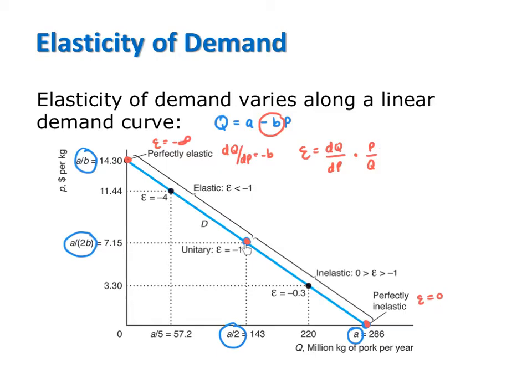At the midpoint, price is a over 2b and quantity is a over 2. Plugging in for price and quantity and then simplifying gives us an elasticity at the midpoint of minus 1. At the price intercept, price is a over b and quantity is zero. Plugging in a quantity of zero gives us an elasticity that's minus infinity.